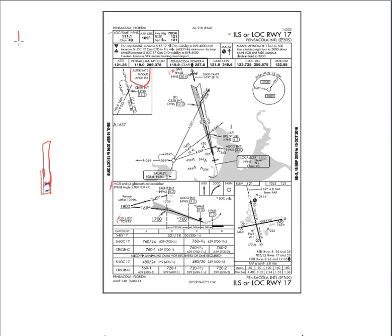So how do we identify the FAF on this ILS approach? FAFs are always glide slope intercept at the published altitude. Here we see 1,700 feet as the published altitude at our glide slope intercept. So when we hit 1,700 feet and we have the glide slope centered, that's when we are at our final approach fix — simple enough for the ILS. We have ILS all the way down to minimums: 321, 1,800 RVR, 200 feet height above touchdown, and 200 and a half for our weather.